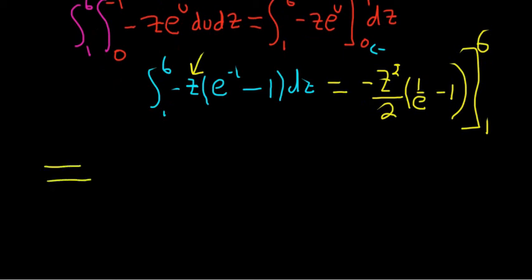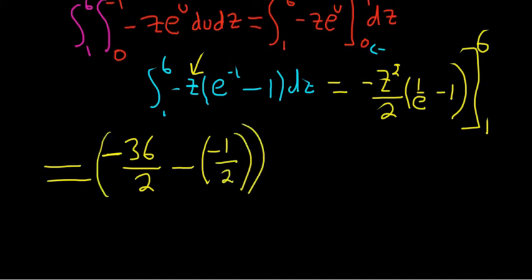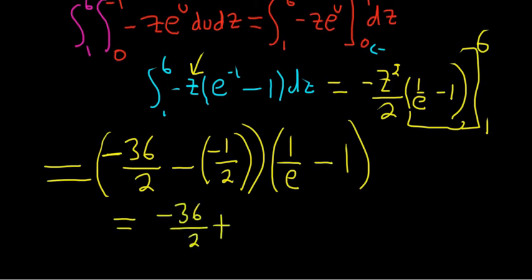And now we're going to plug in the 6 first for the z. So it would be negative 36 over 2, right? And then minus, and then it would be negative 1 over 2. And I'd say, what about the other piece? I'm just going to leave it hanging out there. So this is 1 over e minus 1. Because this is a constant. So we basically plugged in 6. We got 36. Subtracted, then plugged in 1. We got negative 1 over 2. And then this piece here is a constant. So this is negative 36 over 2 plus 1 over 2, right? So this is negative 36 over 2 plus 1 over 2. And then this is 1 over e minus 1.